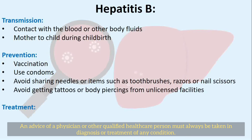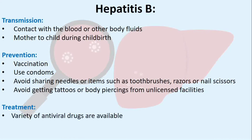Treatment: A variety of antiviral drugs are available which slow the replication of the virus and occasionally result in its clearance. Children born to mothers infected with hepatitis B should also be vaccinated within 12 hours of birth, as this can prevent an infection that will most likely progress to chronic hepatitis B.